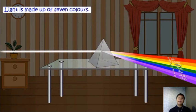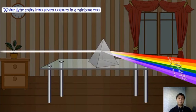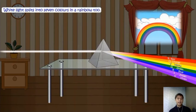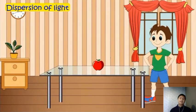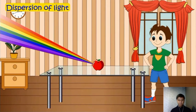Light is made up of seven colors. White light splits into seven colors in a rainbow. This example is what we call dispersion of light. Let's check this again.